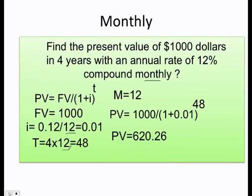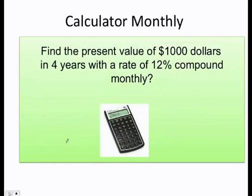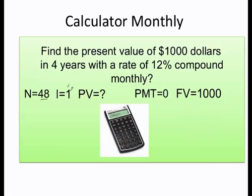As you can see here, the more I compound, the lower my present value. Let's start with the calculator. Remember, 4 needs to be multiplied by 12, that's where you get 48. The interest. Actually, here's the interest. Oh no, we're correct. 12 divided by 12, which is 1, and the future value is 1,000. I was just testing you to see if you're paying attention. The present value is going to be 620.26.